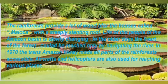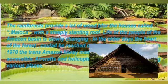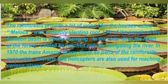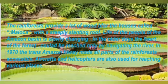The rainforests provide a lot of wood for houses called maluka, with their steeply slanting roofs. Life of the people of the Amazon Basin is slowly changing. In older days, the heart of the forest could be reached only by navigating the river. In the 1970s, the Trans-Amazon Highway made all parts of the rainforest accessible. Aircraft and helicopters are also used for reaching various places.